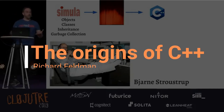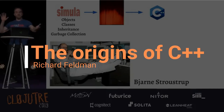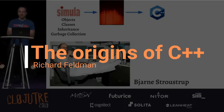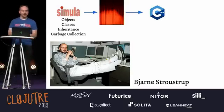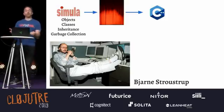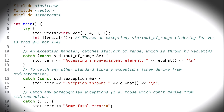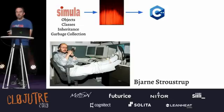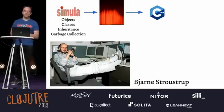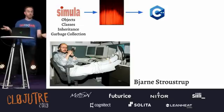This is Bjarne Stroustrup. Anyone know who this gentleman is? I have a spoiler right here on the slide — he's the creator of C++. But he's also the creator of another programming language, which he created before C++. Anyone know what that was called?